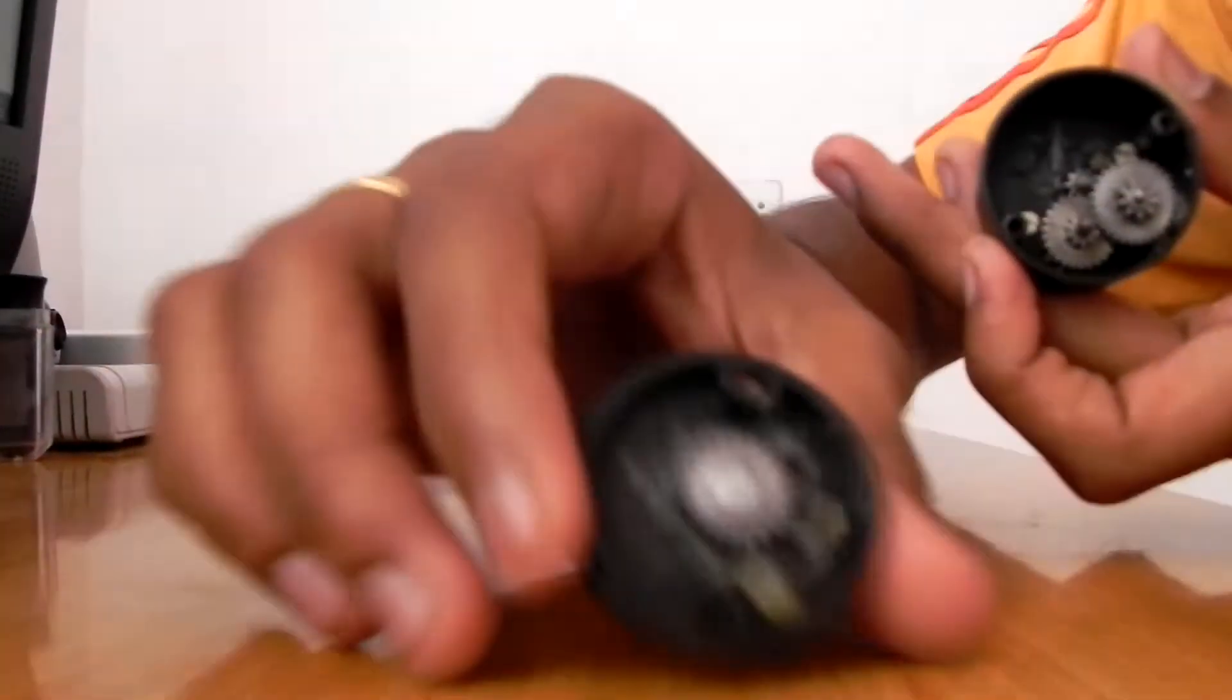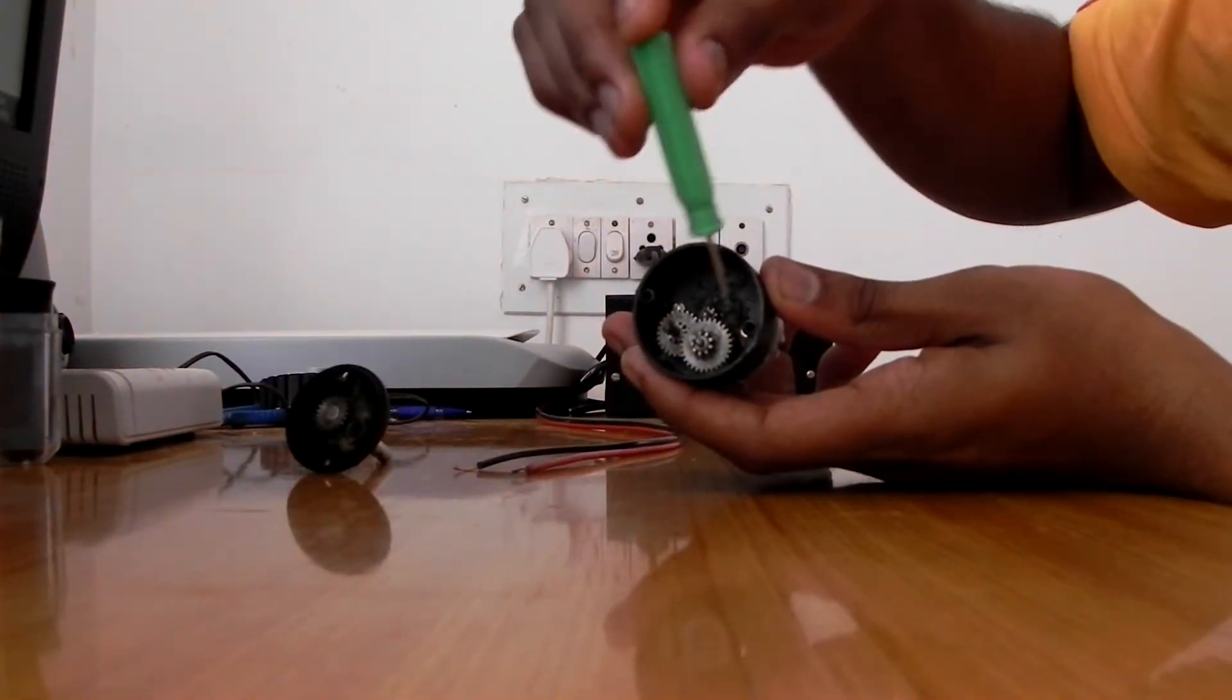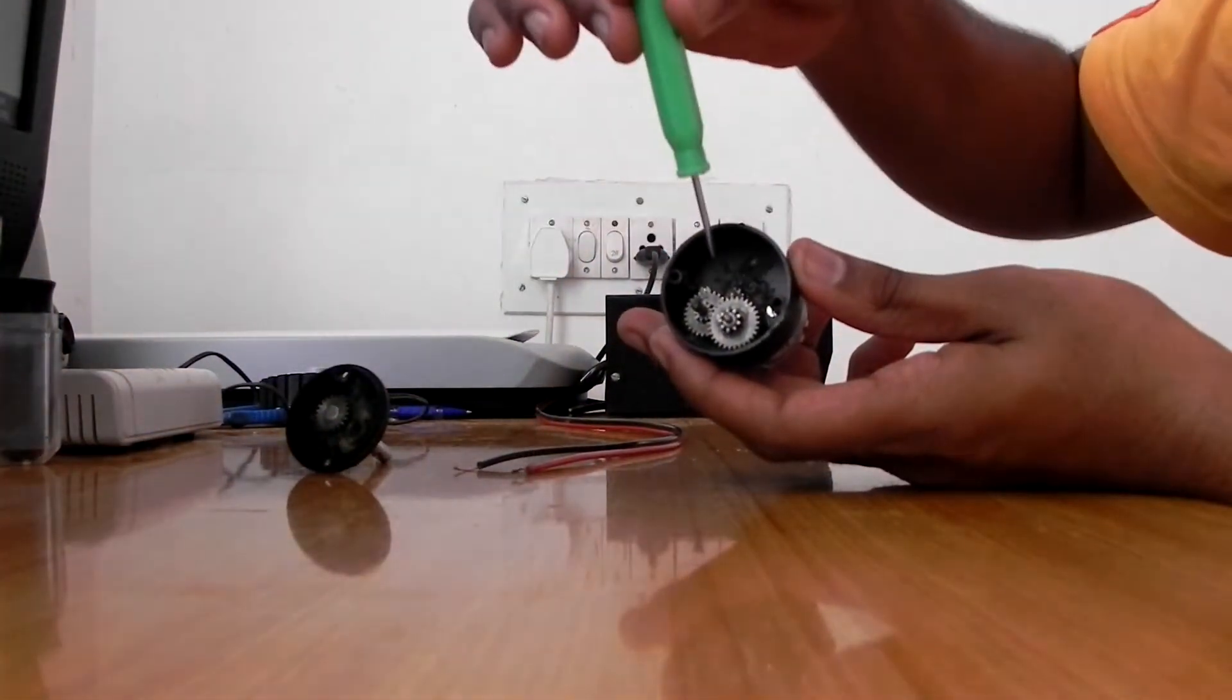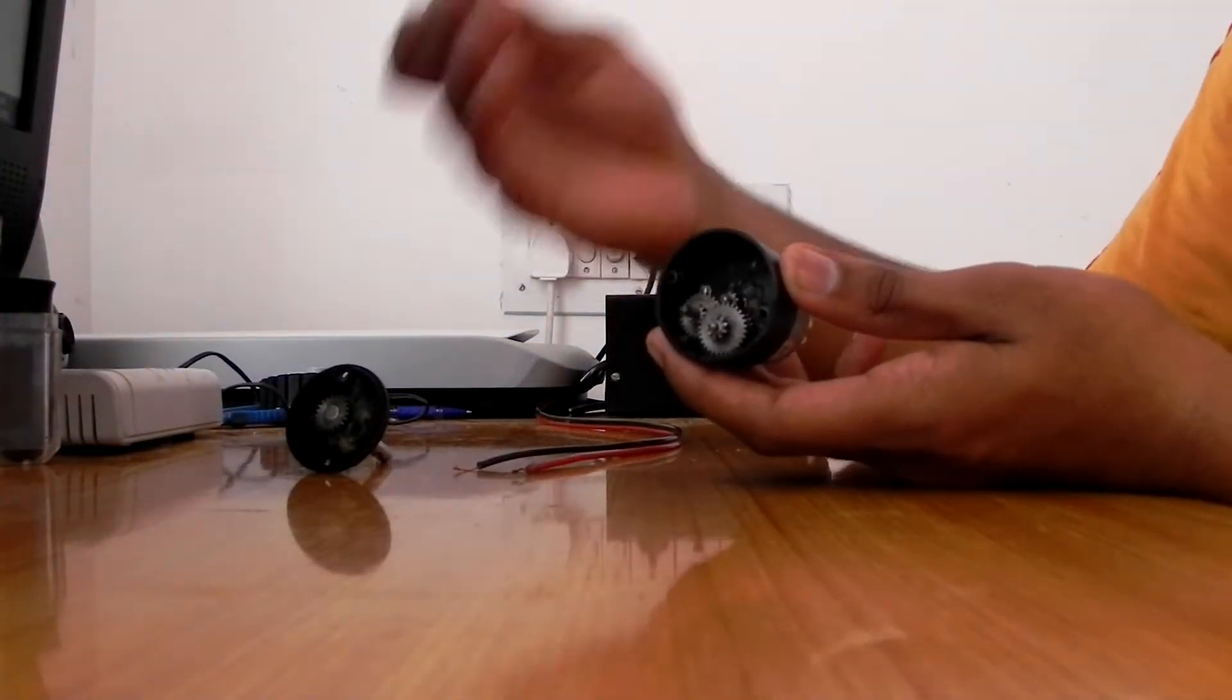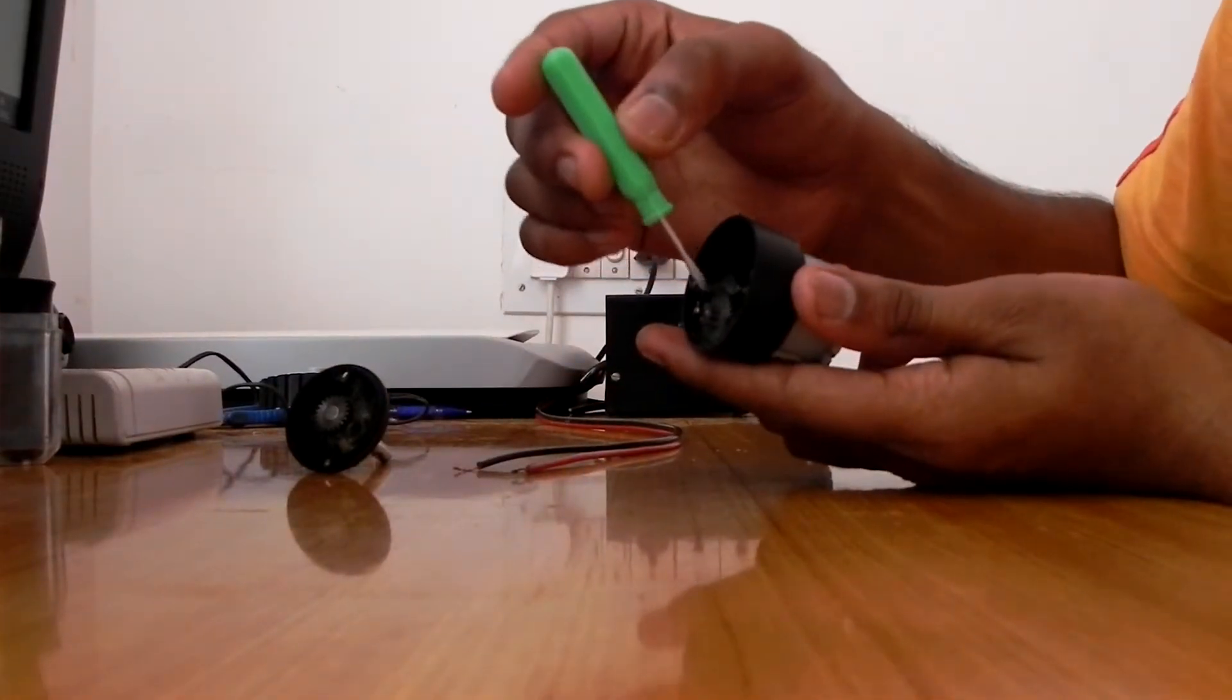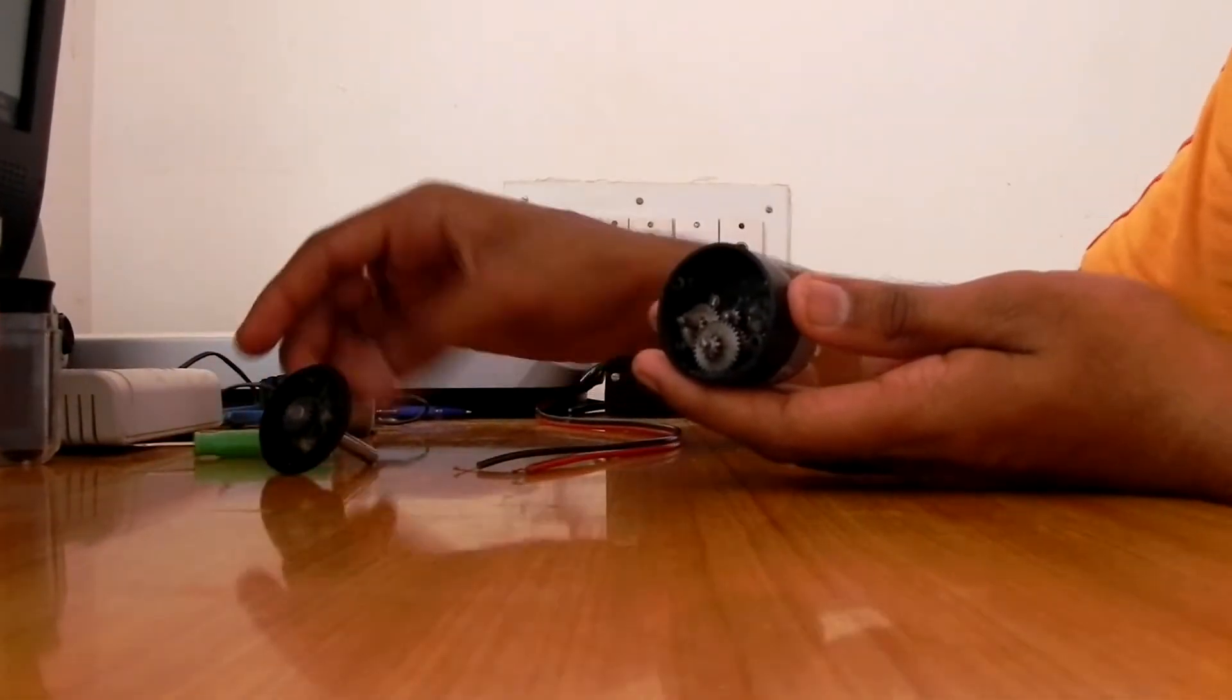This black box contains these gears connected in a system forming the gear train, which controls the speed and the torque of the motor. These gears' diameter determines the speed and torque of the motor.